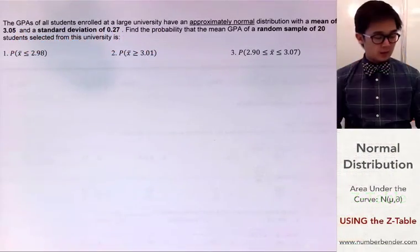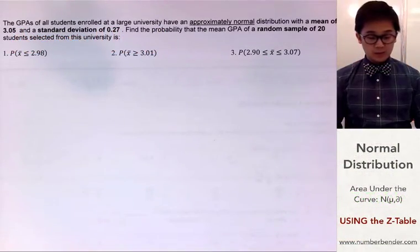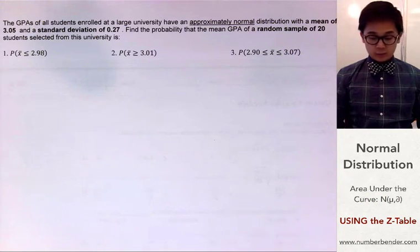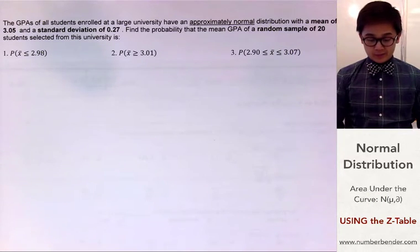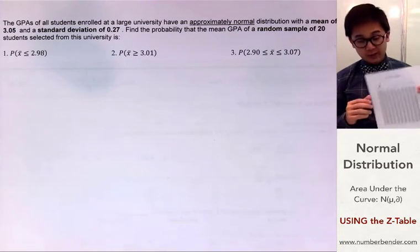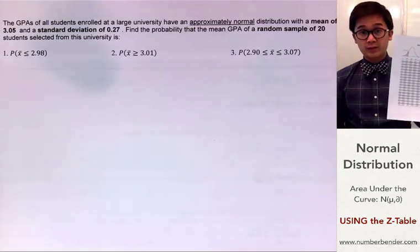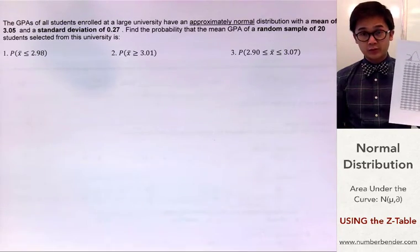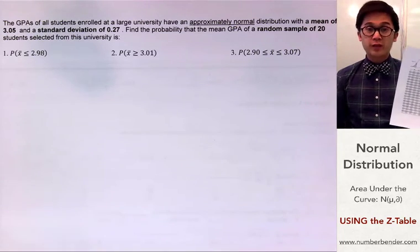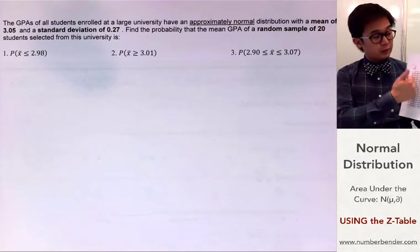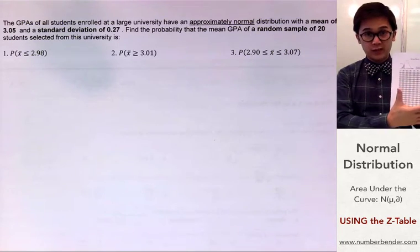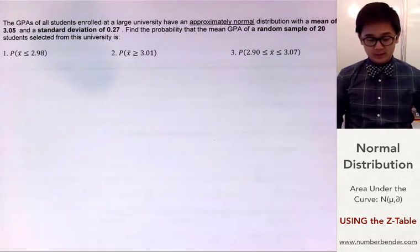Today we're going to find the probability of a given problem using the normal distribution. For this problem, we're going to be using the Z-table. So if you don't have a TI-84, you can still solve for the area under the normal curve using the Z-table or the values that we are using in statistics.